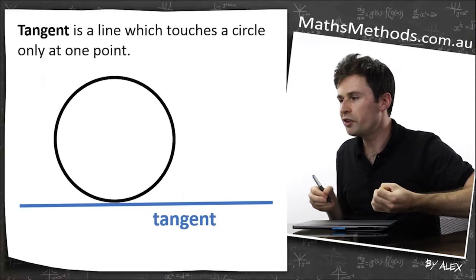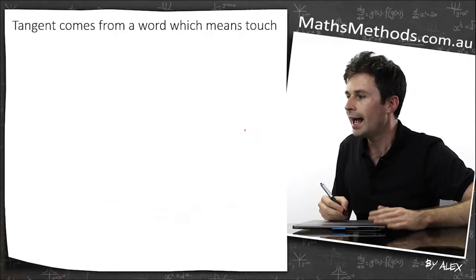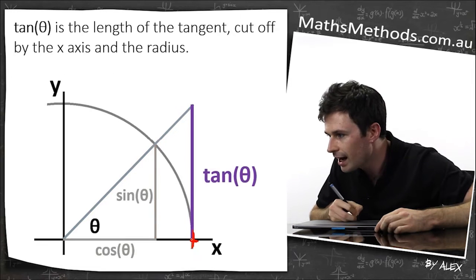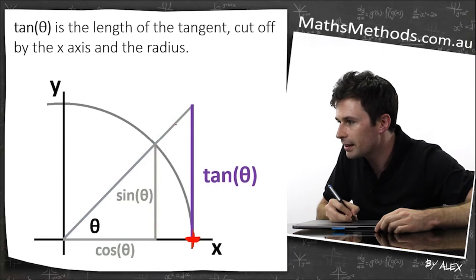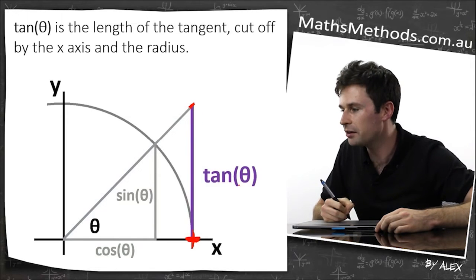So what is tangent? The word tangent is a line which touches a circle only at one point. And tangent actually comes from a word which means touch, and it's cut off by the x-axis and by the radius here. So this purple line is tan theta.